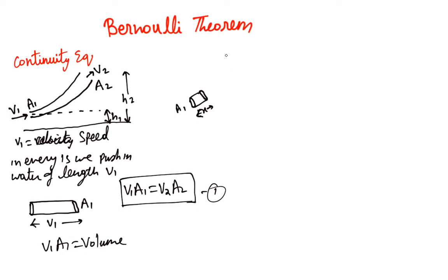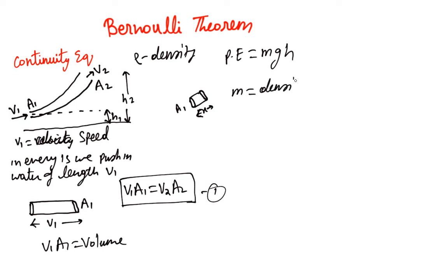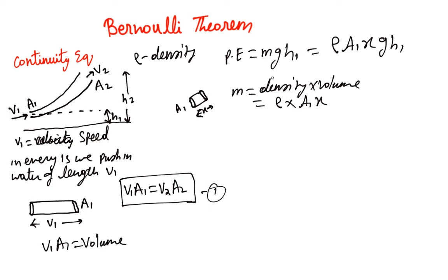This fluid element will have potential energy PE = m·g·h1 = ρ·a1·x·g·h1, where ρ is the density of the fluid, which is not changing with time, height, or distance. The mass is density times volume, which is ρ·a1·x. The kinetic energy of the same fluid element is KE = ½·m·v1² = ½·ρ·a1·x·v1².